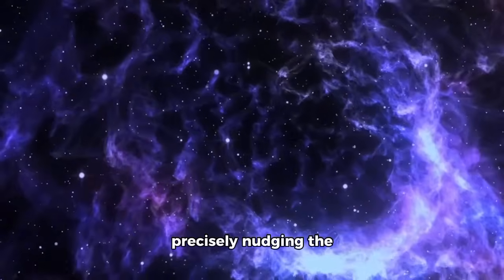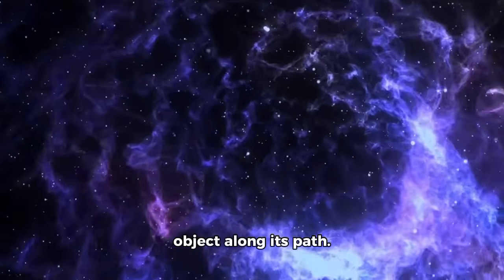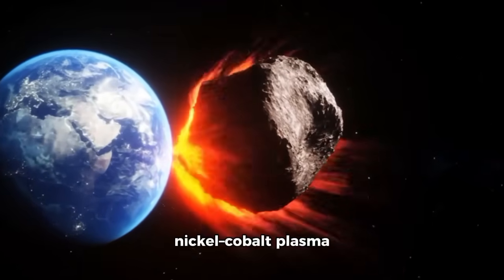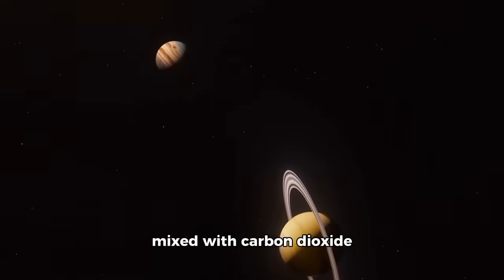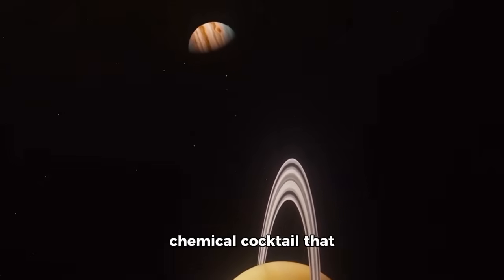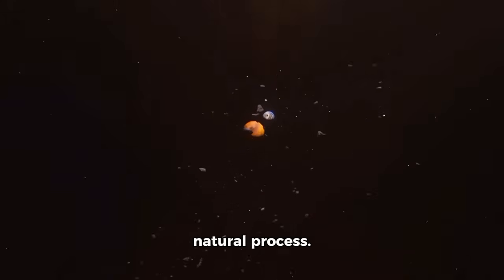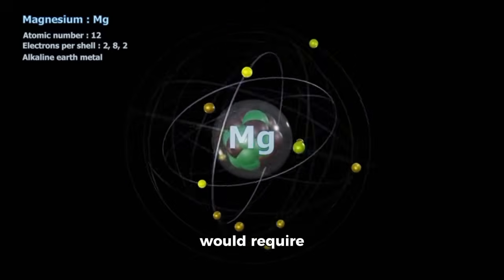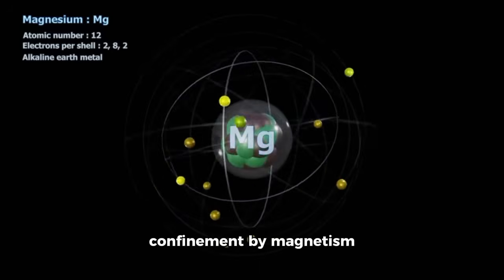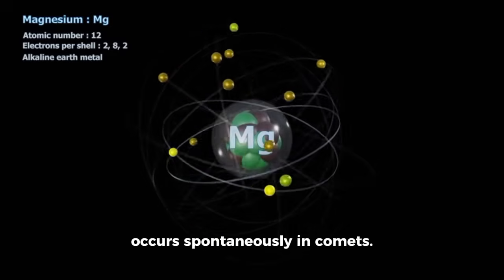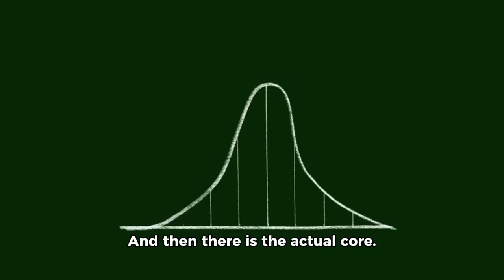Spectral analysis further revealed traces of nickel cobalt plasma mixed with carbon dioxide and carbon monoxide, a chemical cocktail that does not match any known natural process. Producing such a mixture would require temperatures and confinement by magnetism beyond anything that occurs spontaneously in comets. And then there is the actual core.